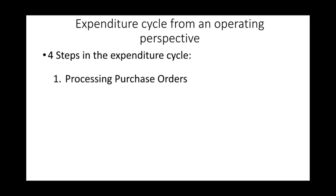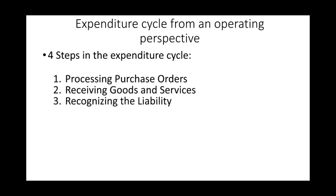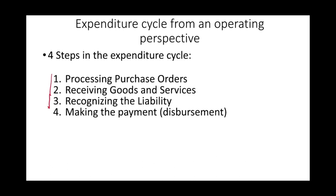Now let's take a look at the expenditure cycle from an operating perspective. I'm going to break the expenditure cycle into four steps. First, there's the processing of purchase orders. Then we're going to be receiving the goods or services. We're going to be recognizing a liability. Then we're going to be making the payment or disbursements — in order: buy, receive the goods, create the liability, make the payment.